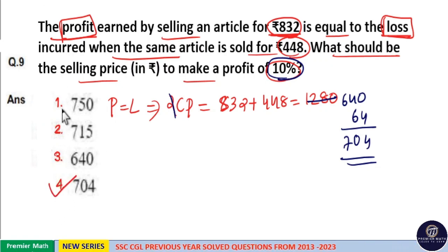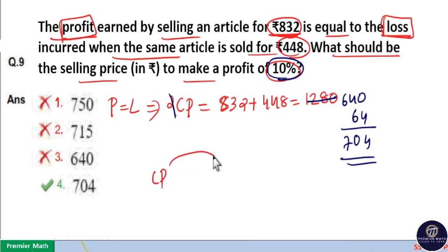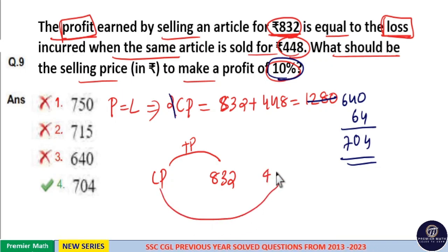The concept here is this is CP. Now you have a profit. Profit means sell price is equal to 832. When you sell at 832 you have a profit, and when you sell at 448 you have a loss.